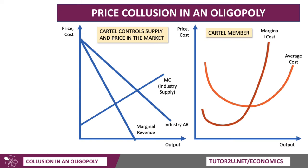Here's the diagram you might be able to use if you want to analyse how a cartel can work. On the left-hand side, we have the market — the industry — supplied by firms in the industry and, in theory, controlled by a cartel. On the right-hand side, we have the price, cost, and output of an individual firm, a member of the cartel.